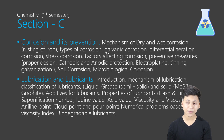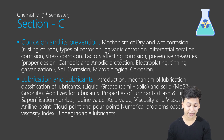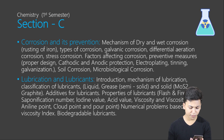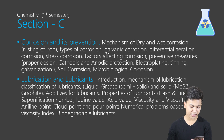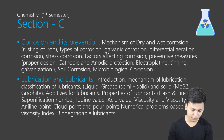Section C comes with two topics: corrosion and its prevention, and lubrication and lubricants. Corrosion involves the mechanism of dry and wet corrosion, electroplating, galvanization, factors affecting corrosion, types of corrosion, differential aeration corrosion, and stress corrosion. This section is more theory-based. Lubrication and lubricants covers introduction, mechanism of lubrication, viscosity, viscosity index, numerical problems, kinematic viscosity, and biodegradable lubricants.